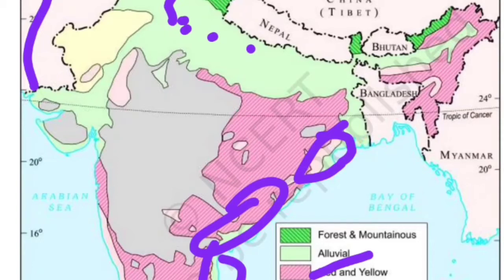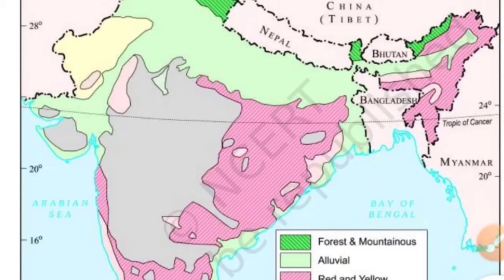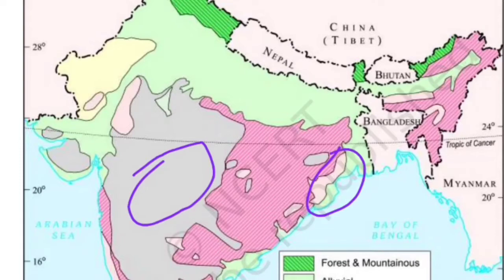Black soil is found mainly in the southern region — in Maharashtra, Saurashtra, Malwa, Madhya Pradesh, Chhattisgarh, and along the Godavari and Krishna valleys. On the map you can see it marked in those areas, with the maximum concentration in Maharashtra, Gujarat, and Chhattisgarh.